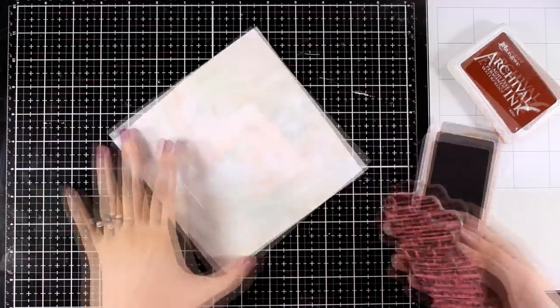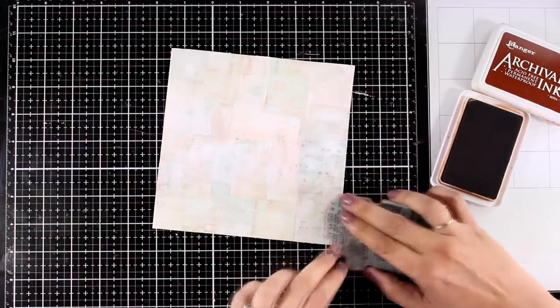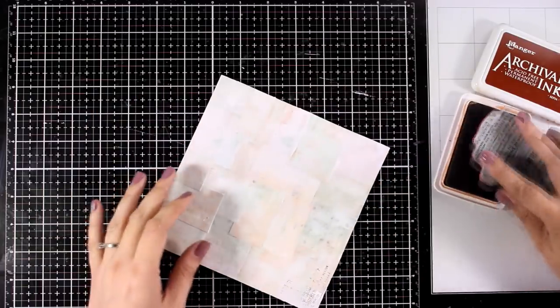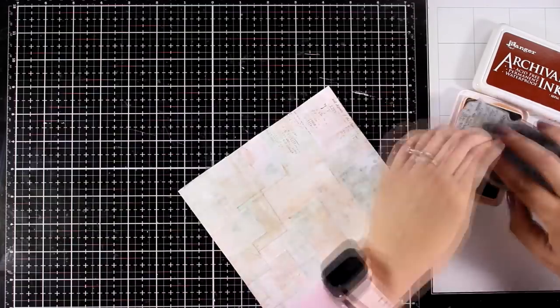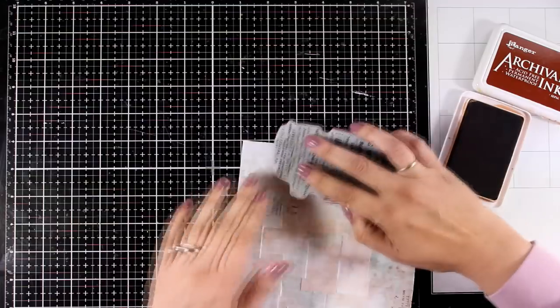A go-to technique for me is to do some stamping on my backgrounds. Here I'm using a text stamp from the Etcetera collection by Tim Holtz. This is one stamp that I keep on using again and again for years now.